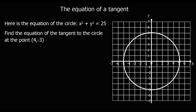Here we're going to find the equation of a tangent to a circle. Here's the equation of a circle: x squared plus y squared equals 25. What's important is that the center is at (0, 0). And we want to find the equation of a tangent to the circle at the point (4, -3).